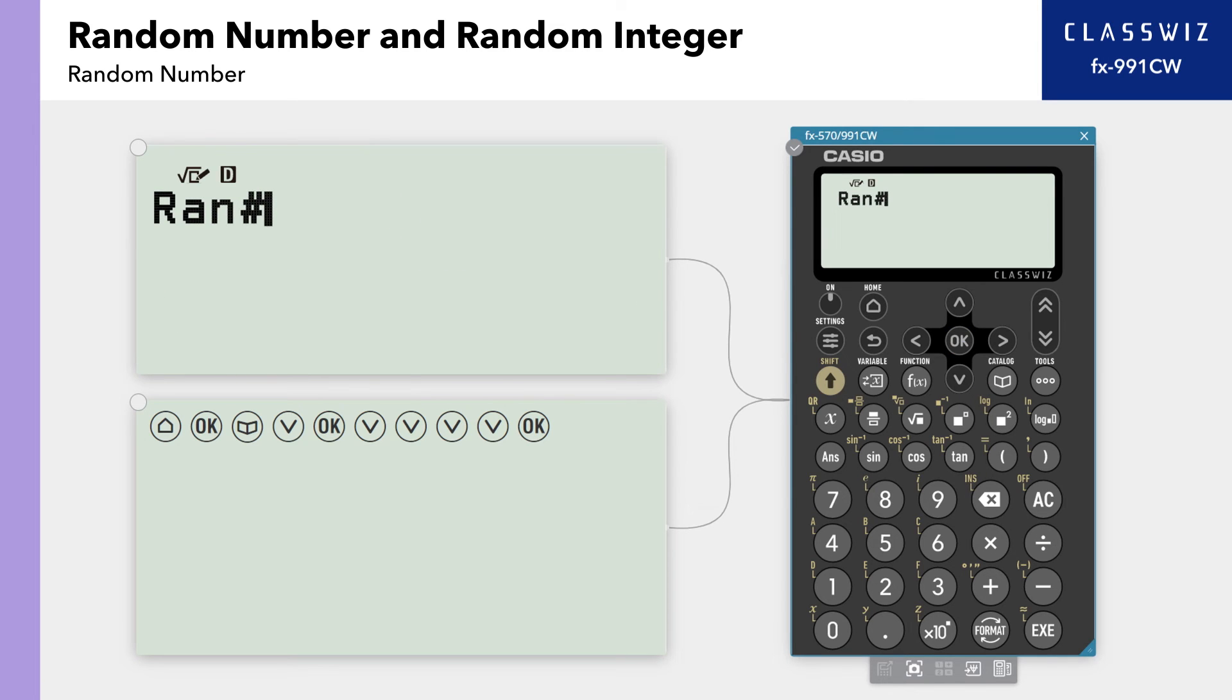Press Execute to display a random number between 0.000 and 0.999 as a fraction. As you can see, a new random number is generated each time Execute is pressed.